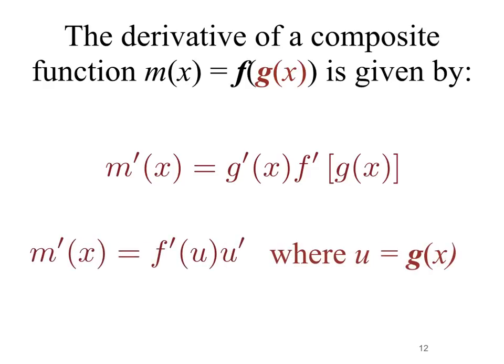Sometimes we think of this inside function as u, so this can be rewritten as m prime of x is equal to f prime of u times u prime, where u prime is the derivative of the inside function, f prime is the derivative of the outside, and u is equal to g of x in this formulation.